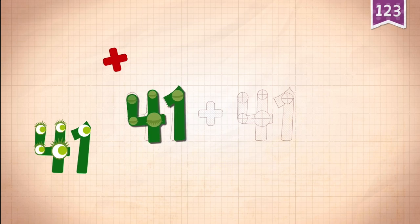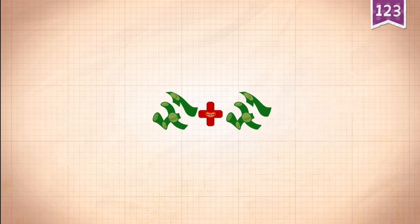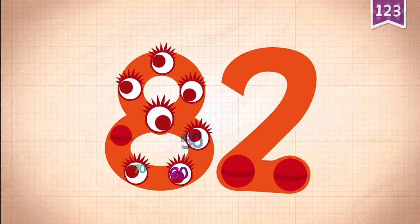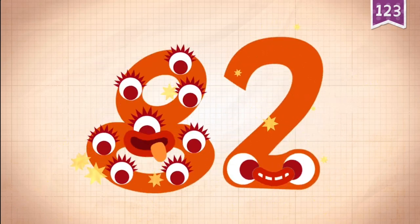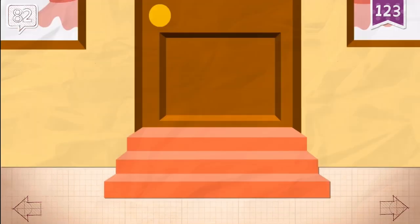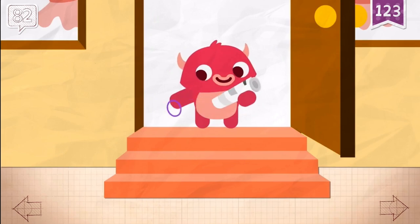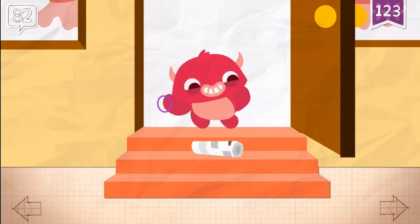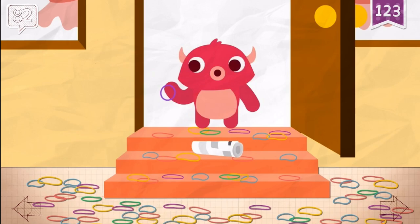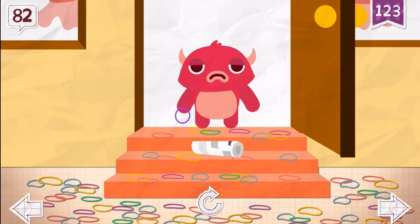41 plus 41, plus 41, plus 41 equals 82. 82! Pinkerton once had a ball made of 82 rubber bands.